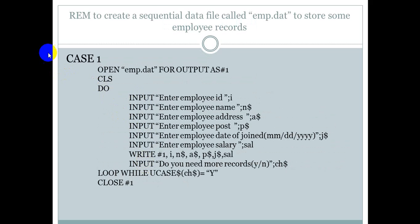If your choice is one, that is Case 1, it will create an emp.dat file in output mode, file number one. We use a Do loop. The fields are: employee ID (i), employee name (n dollar), employee address (a dollar), employee post (p dollar), employee date of join in MM/DD/YY format (j dollar), and employee salary (l). After taking input, we write to the file using the WRITE# statement. Then we ask the user: do you want to continue? If yes, the loop continues; otherwise it terminates.